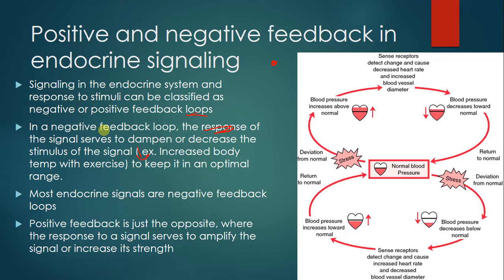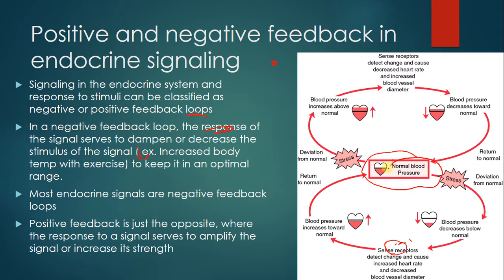Another example of negative feedback is blood pressure regulation. Stress elevates blood pressure; receptors sense this change and decrease heart rate while increasing blood vessel diameter, which lowers blood pressure back to normal. Conversely, if blood pressure drops below normal, those same receptors increase heart rate and decrease blood vessel diameter to raise it back. The response dampens the stimulus in either direction—that's negative feedback.